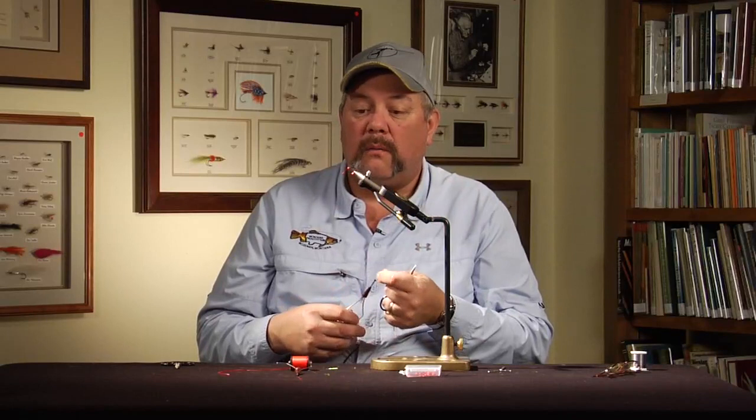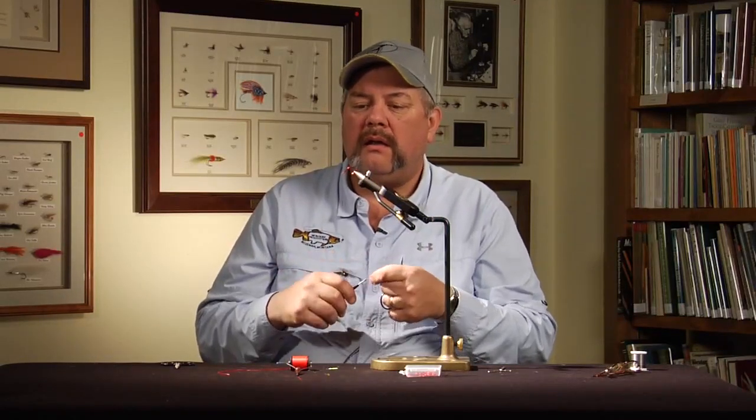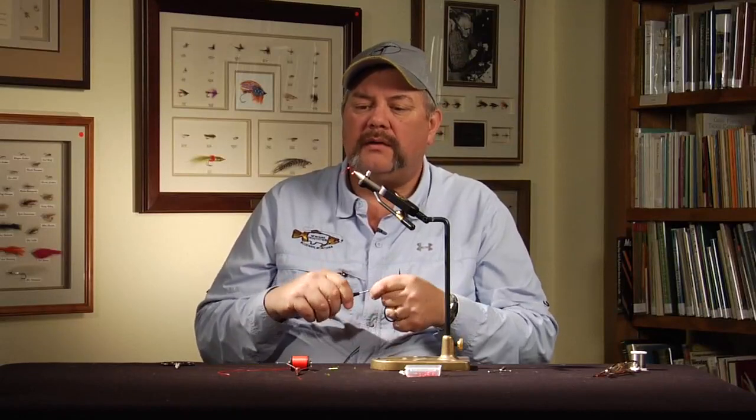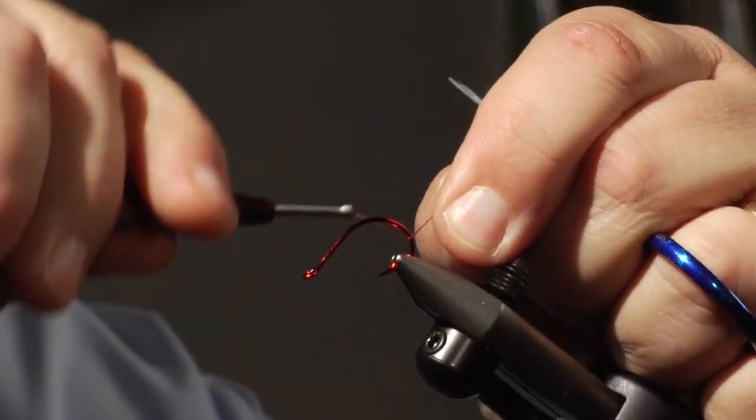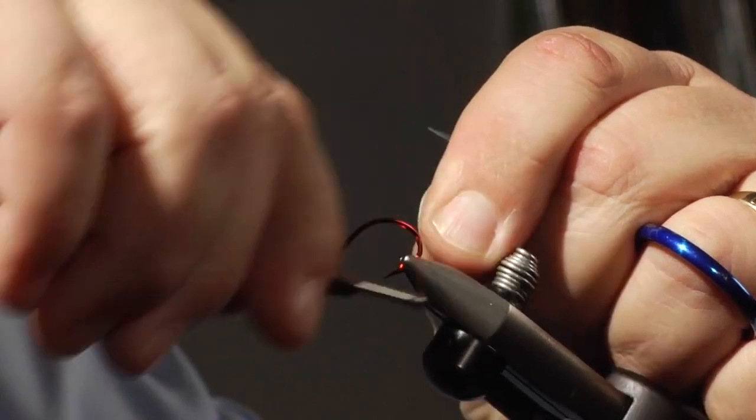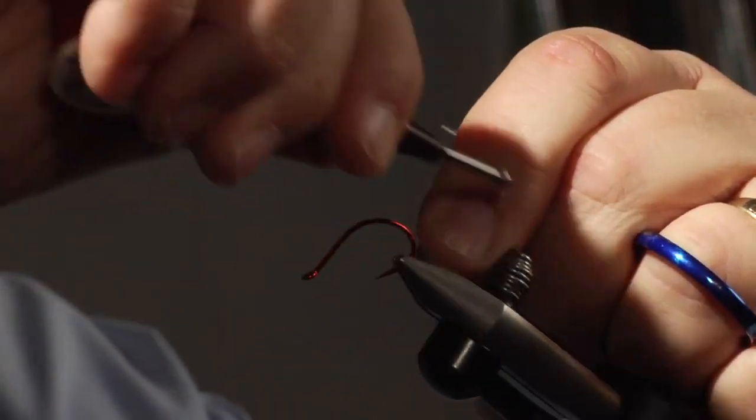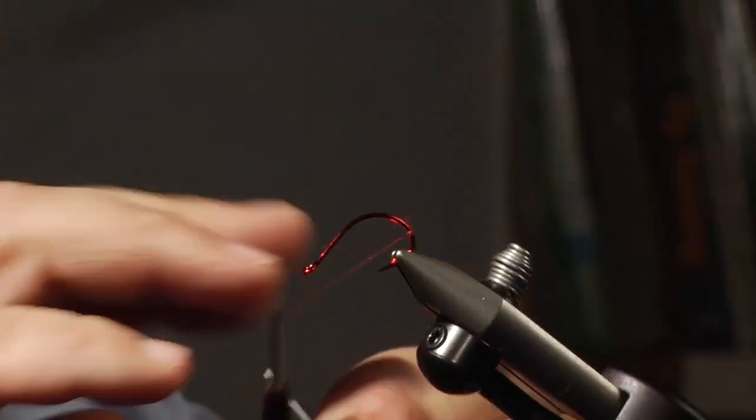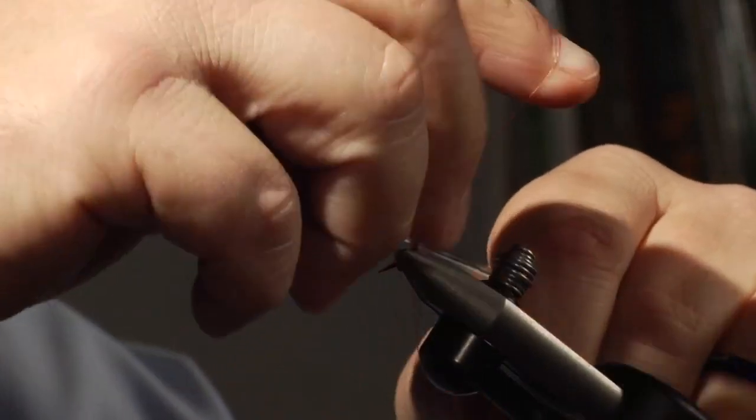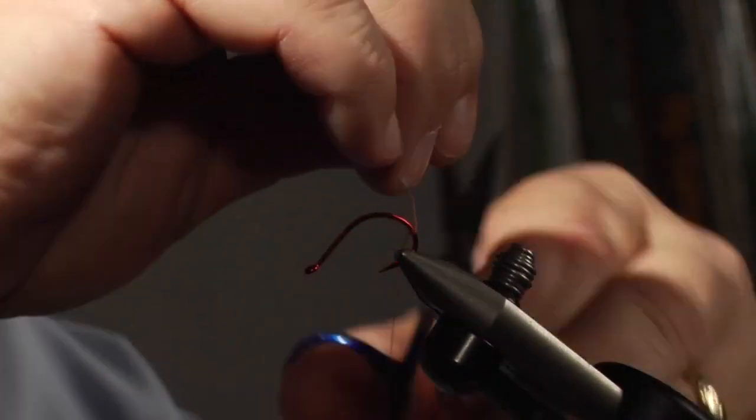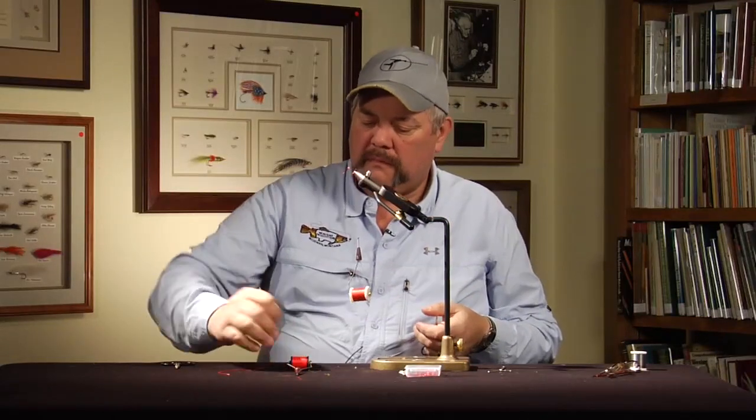What you need for this fly is the hook, and then you need to have some red monochord or heavy duty, like a 210 thread, like Flymaster Plus. You're going to start your thread at the back bend of this hook, and that's all you're going to do. You're going to make four or five good wraps right there, throw a half hitch in, trim off the thread tag.